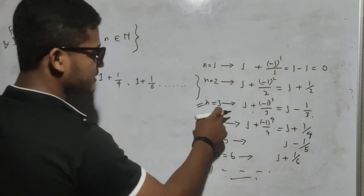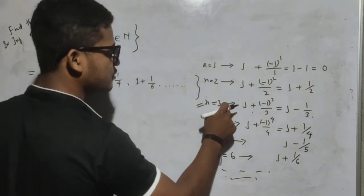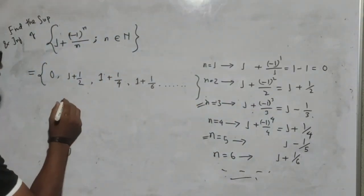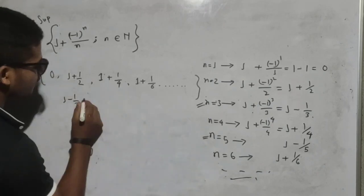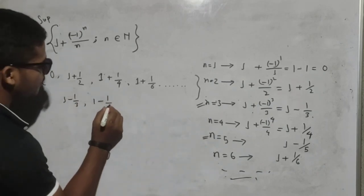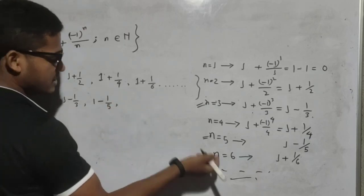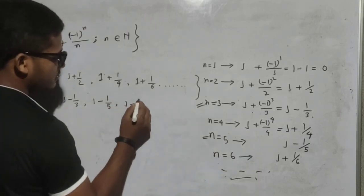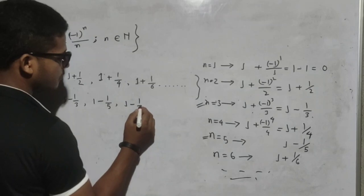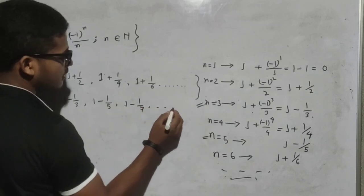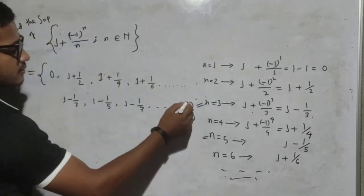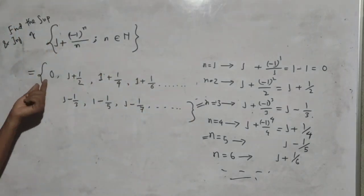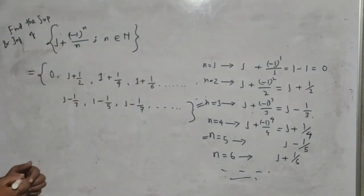The elements I should note: for n equal to 3, the element is 1 minus 1/3; for n equal to 5, it is 1 minus 1/5; for n equal to 7, you will get 1 minus 1/7, and so on. These are all the elements — this set has infinitely many elements.